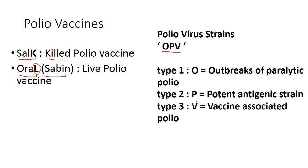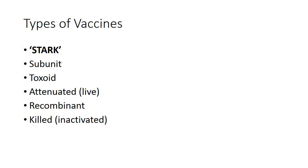For OPV strains 1, 2, and 3: Type 1 is mostly involved in outbreaks of paralytic polio still prevalent in the world. Type 2 was the first to be eradicated — it was the most potent antigenic strain. Type 3 has been recently eradicated and is most commonly associated with vaccine-associated polio. Mnemonic: O = Outbreaks (type 1), most Potent (type 2), Vaccine-associated polio (type 3).